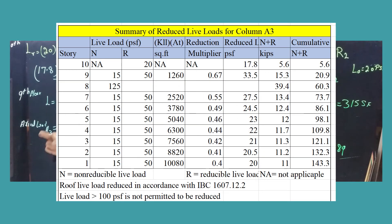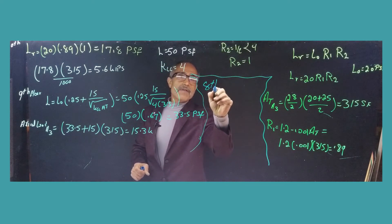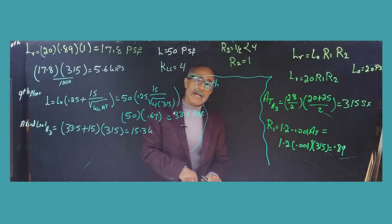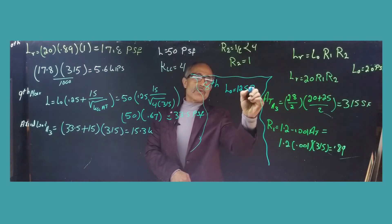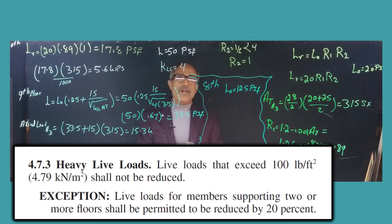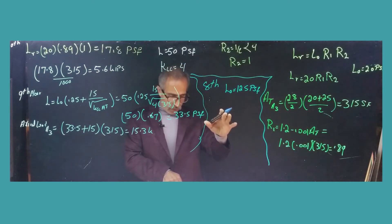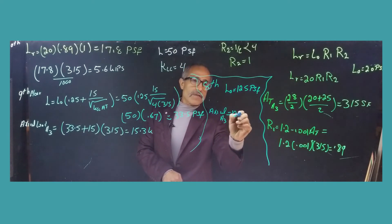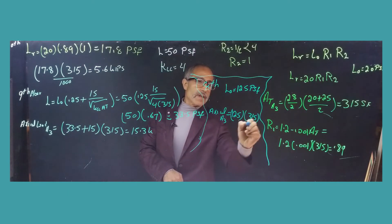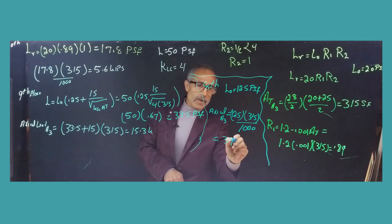Now the 8th floor, which is storage. The live load is 125 pounds per square foot. The code says you cannot reduce live loads greater than 100 psf, so we stay at 125 psf with no reduction. The column load for A3 from this floor is 125 × 315 / 1,000 = 39.4 kips.